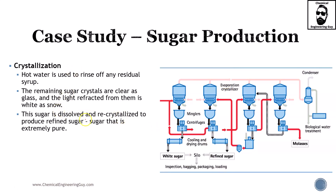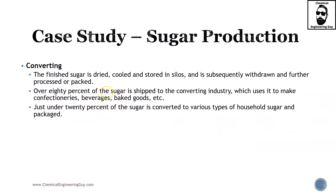Finally, the finished sugar is dried, cooled, and stored in silos. It is subsequently withdrawn for packing — which is more manufacturing than chemical engineering. Over 80 percent of the sugar is shipped to the converting industry, which uses it to make confectionery, beverages, baked goods, and so on — that's business-to-business. Only 20 percent actually ends up in a household — that's business-to-consumer.